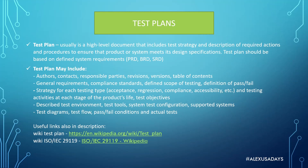Test plans may include authors, contacts, responsible parties, revisions, versions, and a table of contents. They might also include general requirements, compliance standards, defined scope of testing, and definition of pass/fail criteria. They may include a strategy for each testing type — such as acceptance testing, regression testing, compliance testing, and accessibility testing. Testing activities at each stage of the product's life, test objectives, test environments, test tools, system configurations, supported systems, test diagrams, test flows, and sometimes actual tests can also be included — some test plans can be very detailed.